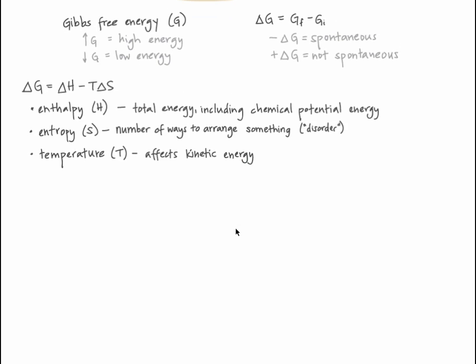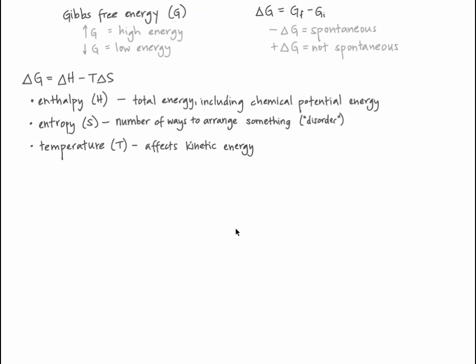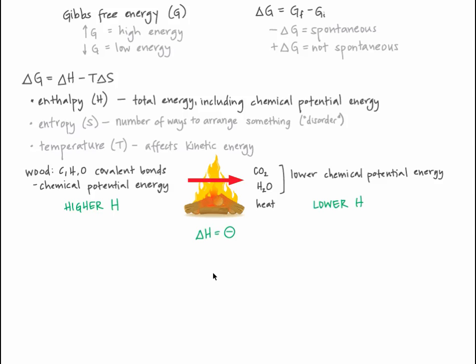Intuitively, it makes sense that each of these factors is included in spontaneity. Think again about wood burning to form carbon dioxide and water vapor. The chemical potential energy in wood is higher than in carbon dioxide and water vapor, so enthalpy decreases in this reaction. This is analogous to a rock rolling down a hill, moving toward lower potential energy. A decrease in enthalpy contributes to the spontaneity of a process.